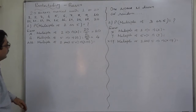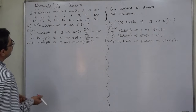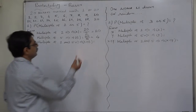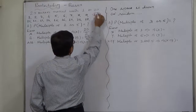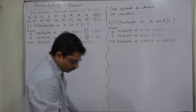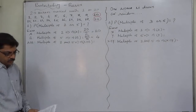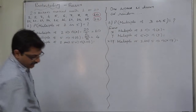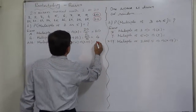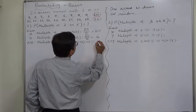Multiples of both 2 and 5 are 10 and 20, so there are 2 such values. Therefore, the number of favorable cases for A intersection B is 2.